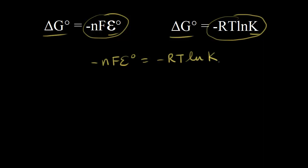Now let's solve for E zero — the standard cell potential. To do that, we need to divide both sides by negative NF. So we get E zero is equal to positive RT over NF times the natural log of our equilibrium constant.